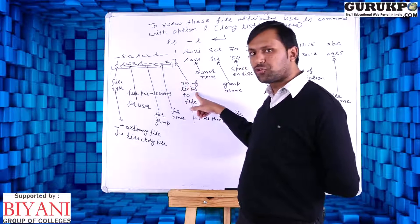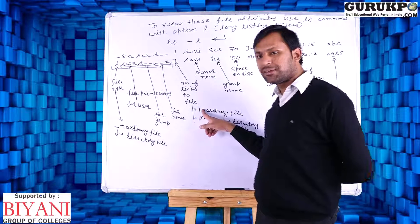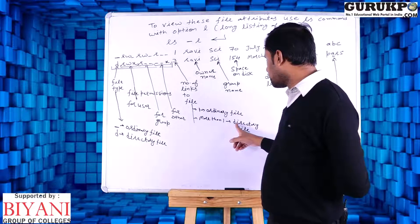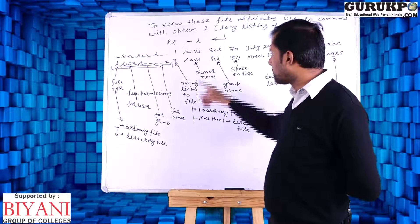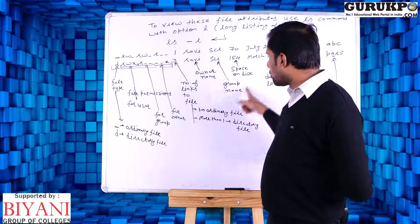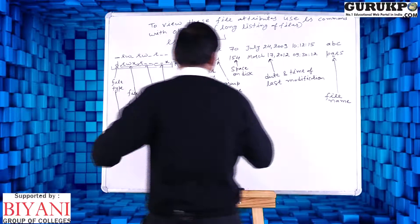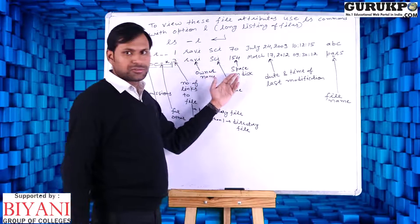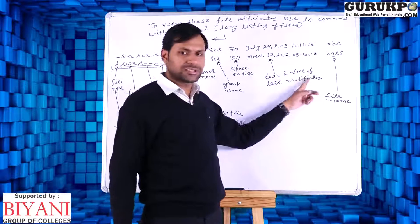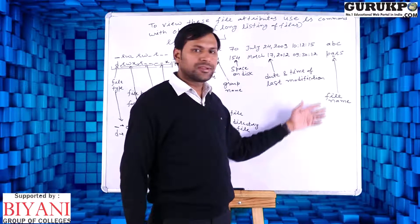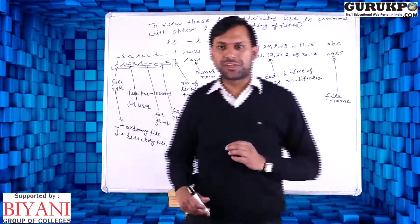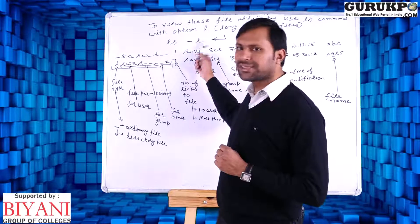Number of links to file: if we have one link it shows an ordinary file, more than one shows a directory file. Then owner name of file, then owner group name, then space on disk, last date and time of last modification in file, then file name. These are known as file attributes, which we can view using the ls -l command.